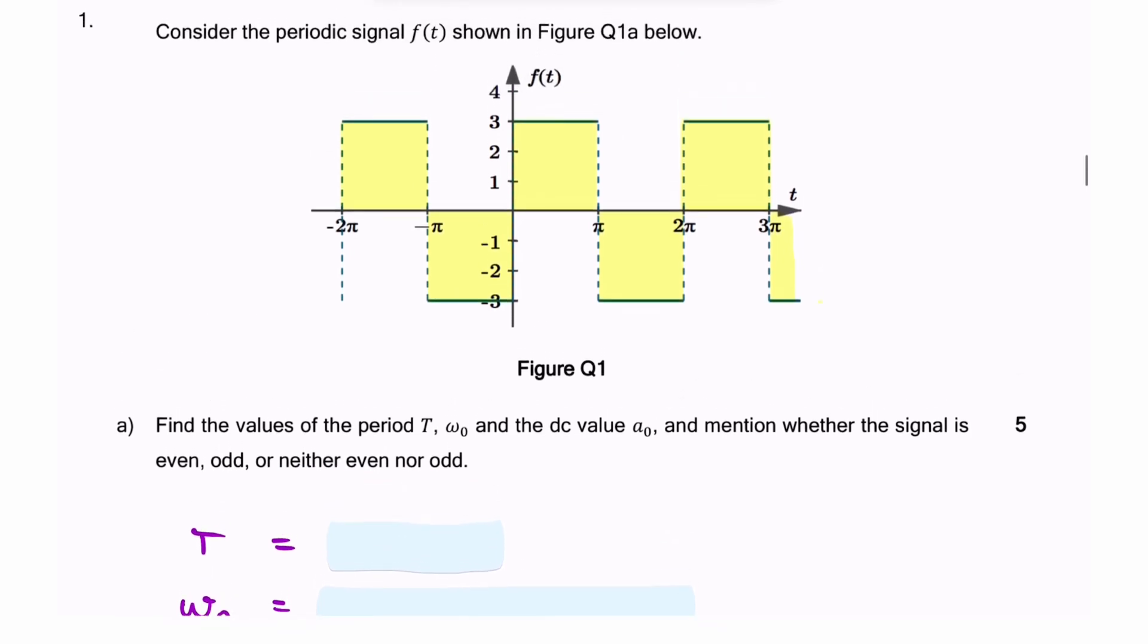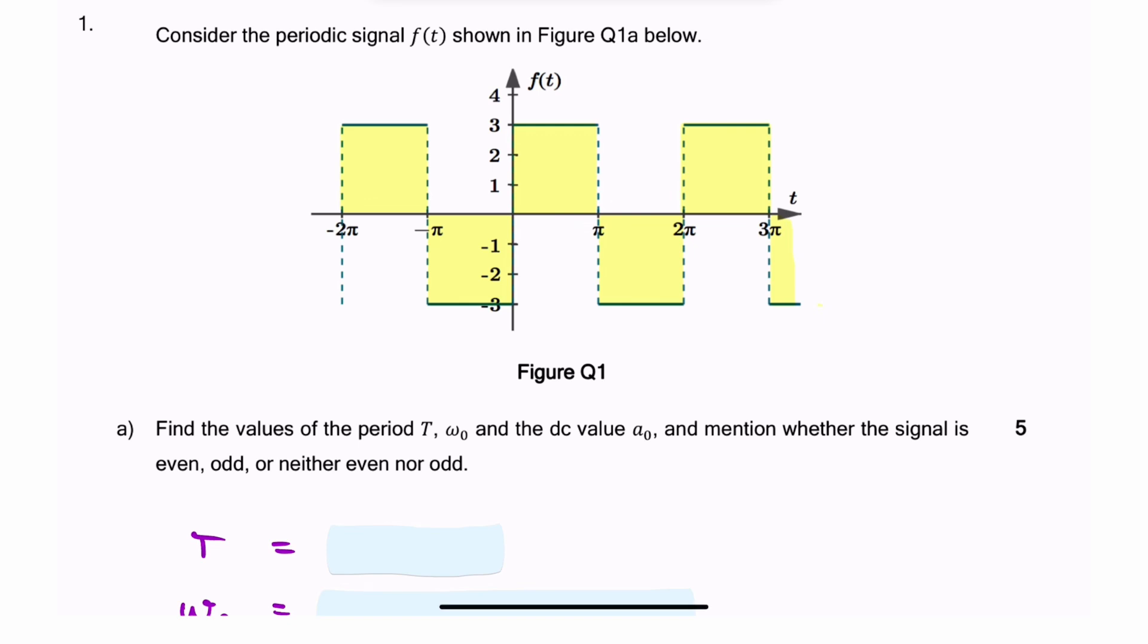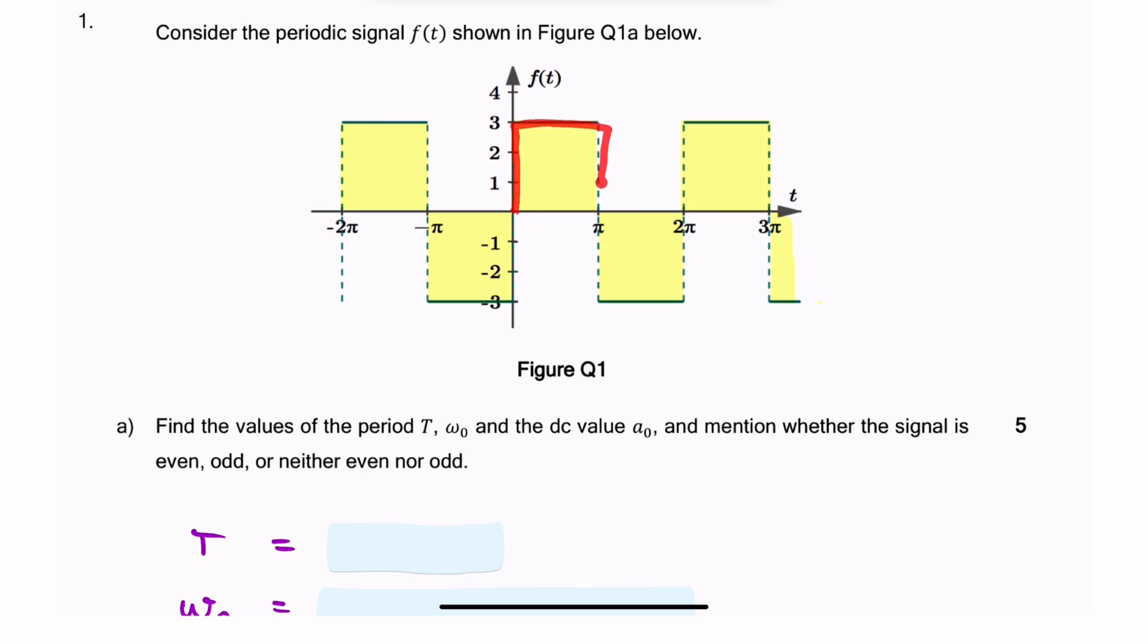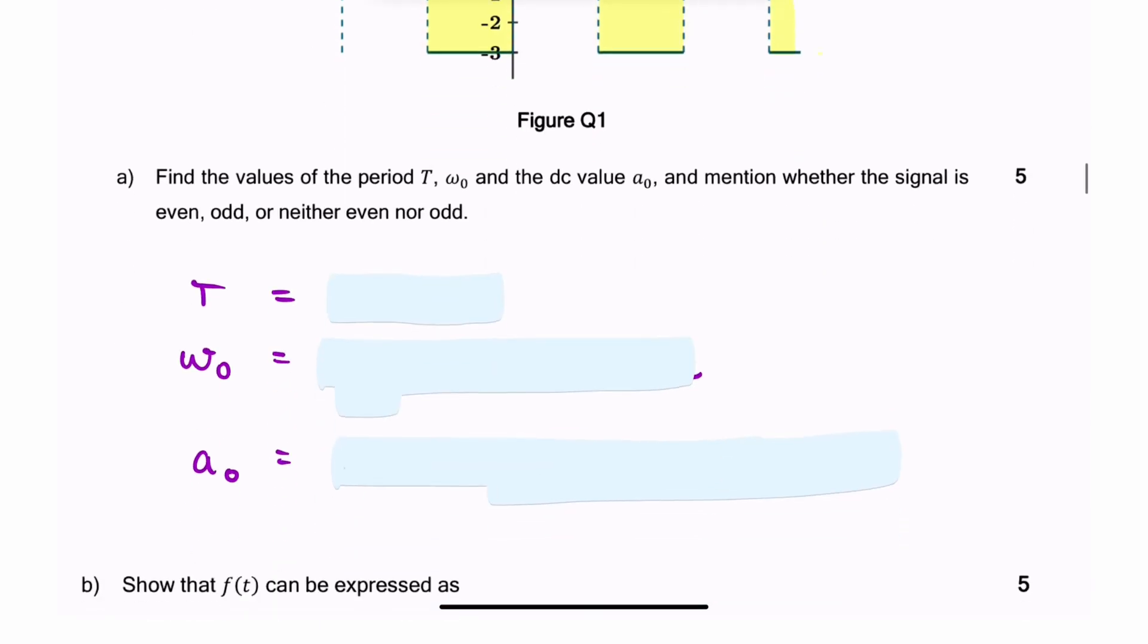First of all, the fundamental period is the time it takes for the signal to repeat itself. Once you've identified the actual signal, this is the time it takes to repeat, from zero to 2π. So now we know the period.